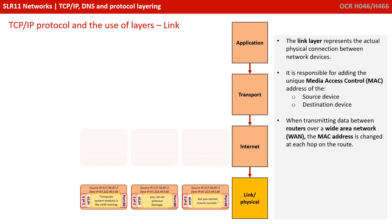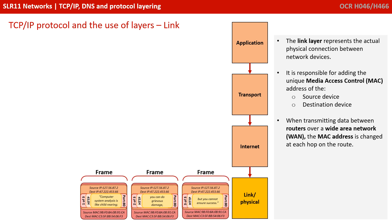We finally pass these down to the link layer, which represents the actual physical connection between the network devices. At this layer, the packets are now referred to as frames. This layer is responsible for adding the unique Media Access Control, or MAC, address for both the source device and the destination device. When transmitting data between routers over a wide area network, the MAC address changes at each hop on the route.